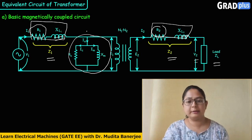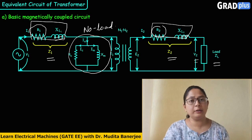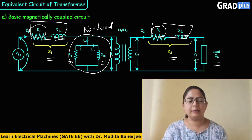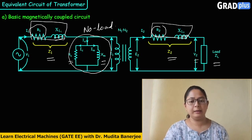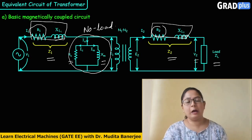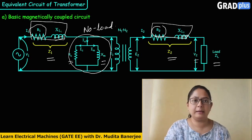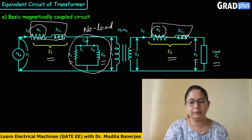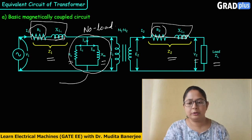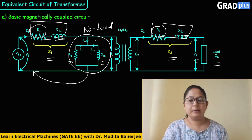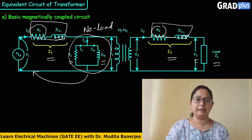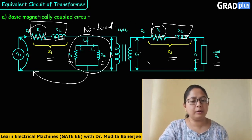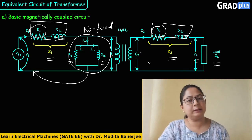There is one branch called the no-load branch, connected in parallel to the supply, in which the no-load current I0 flows. It contains a core loss component and a magnetizing component. E1 and E2 are the EMFs induced in the primary and secondary windings. To make calculations simpler and to calculate efficiency and voltage regulation, the parallel no-load branch is shifted in front of R1, and the entire secondary circuit is transferred to the primary side.